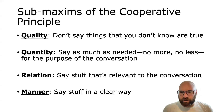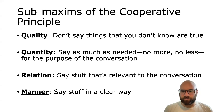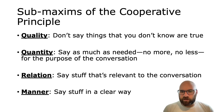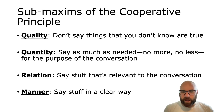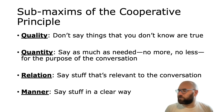The next one is quantity. So people say as much as needed for the purpose of conversation — they don't say a lot of extra stuff and they don't leave things out. The third one is relation: we assume that people say things that are related to the conversation. And the last one is manner: we assume people say things in a clear, brief, and unambiguous way instead of being very weird and wordy.